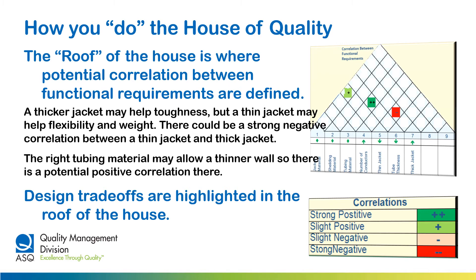Now it's time to focus on the roof of the house. This is where potential positive and negative correlations between functional requirements are defined. For the example shown here, a thick jacket may provide toughness, while a thin jacket would allow flexibility and low weight — meaning there's a strong negative correlation between column five and column seven. In another example, the right tubing material may allow thinner tubing, so there's a positive correlation there. You can see how functional requirements can be used to enhance each other and how this helps make decisions about trade-offs.